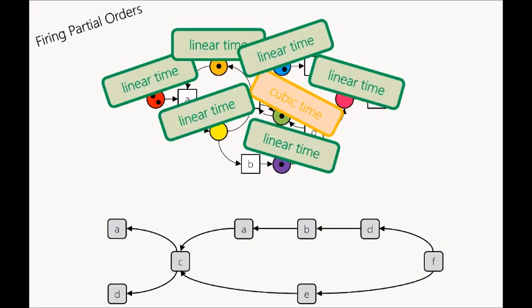So in this example we handled six of the seven places in linear time just by firing the partial order forwards and backwards and only one place is left for the usual token flow algorithm.